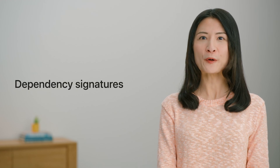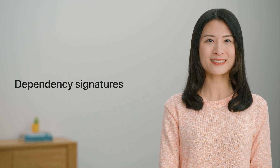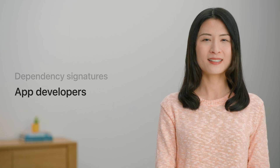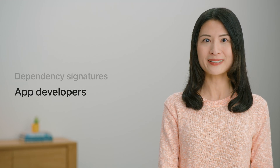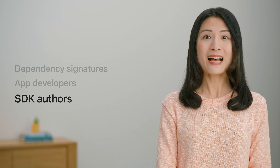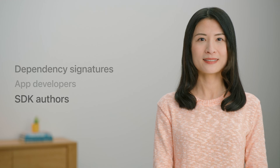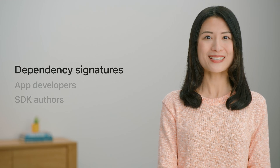Now that you know what supply chain security is, I'll talk about the role that digital signatures play in protecting developers and in helping reduce this burden. To begin, I'll give you an overview on how Apple's code signing technology works and what Xcode now does to verify the signatures of your dependencies. Then I will talk about how app developers can use this feature to ensure that their dependencies haven't been compromised. And finally, I'll discuss what SDK authors can do to improve the security of the ecosystem.